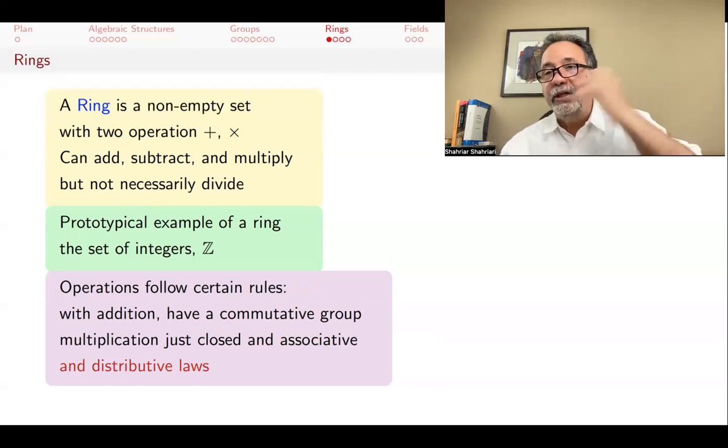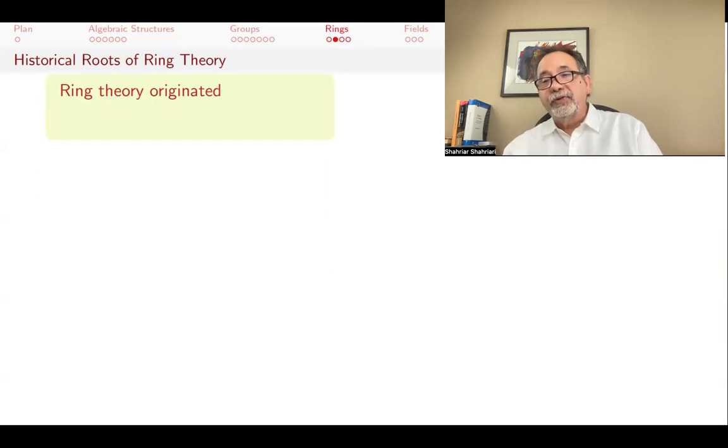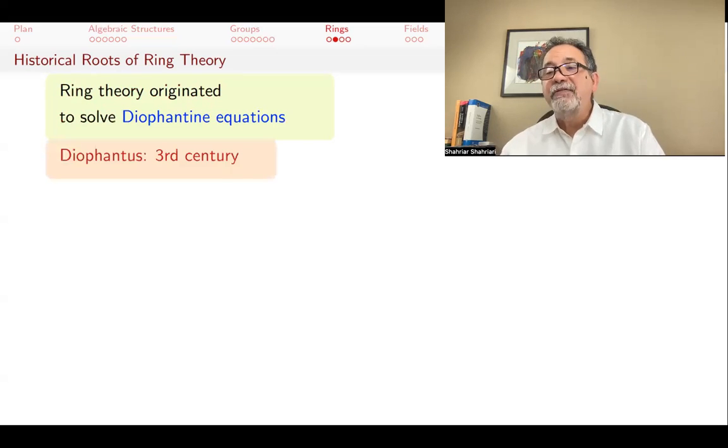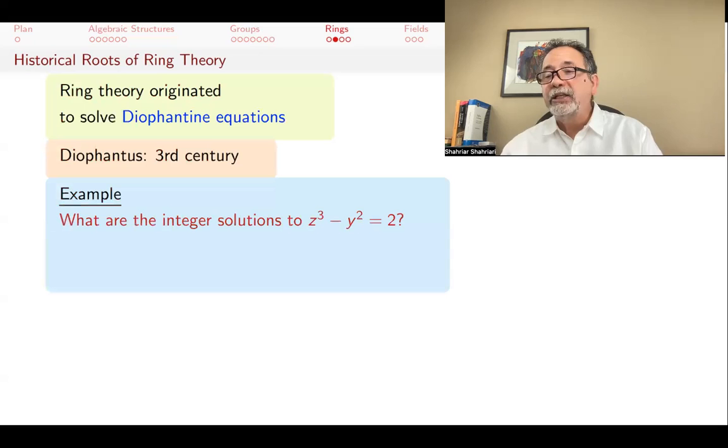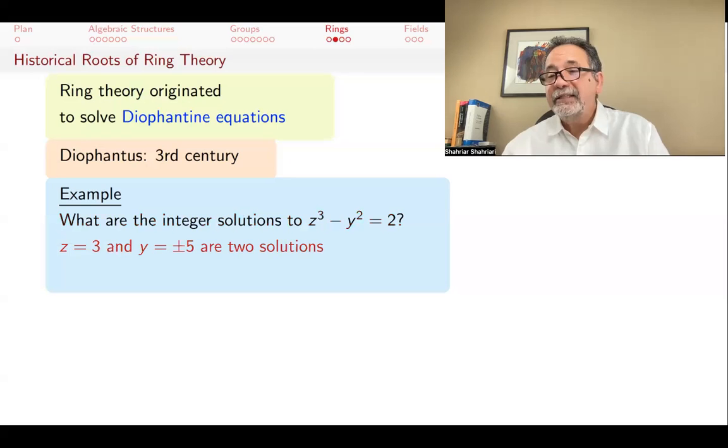Again, what exactly rings are will become clear in the lectures on rings, but right now I'm just interested in telling you where these rings come from. Ring theory originated differently, again from solving equation, but a very different kind of equation, so-called Diophantine equations. Diophantus is from the third century. An example of a Diophantine equation is z cubed minus y squared equals two. You want to solve this equation, but the important thing about a Diophantine equation is that you're interested not in all solutions, you're just interested in integer solutions. So you want z and y to be integers, and when you cube z and square y and subtract them, you get two. Another way of saying that is that you want to find two integers that are two apart. The bigger one is a cube and the smaller one is a square. Is that possible?